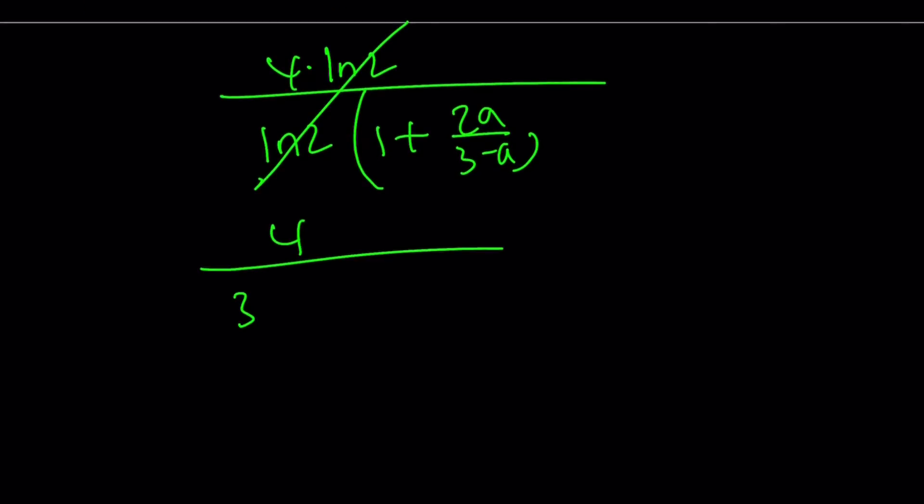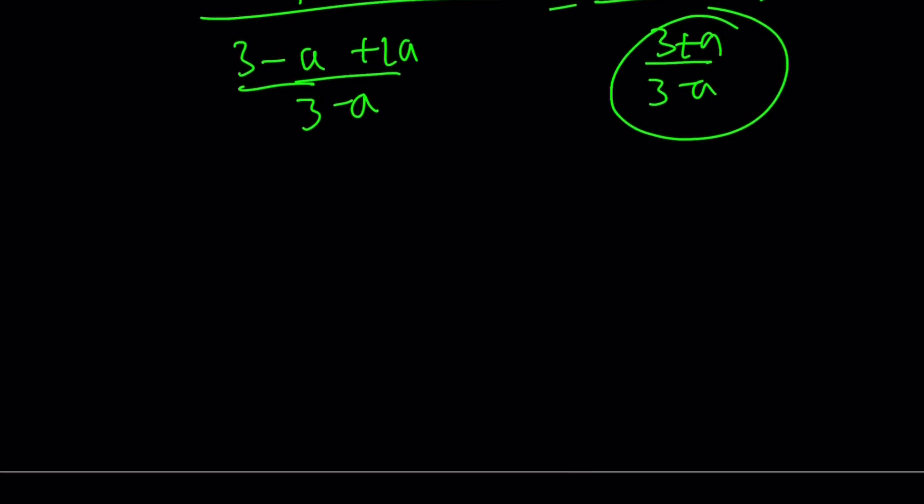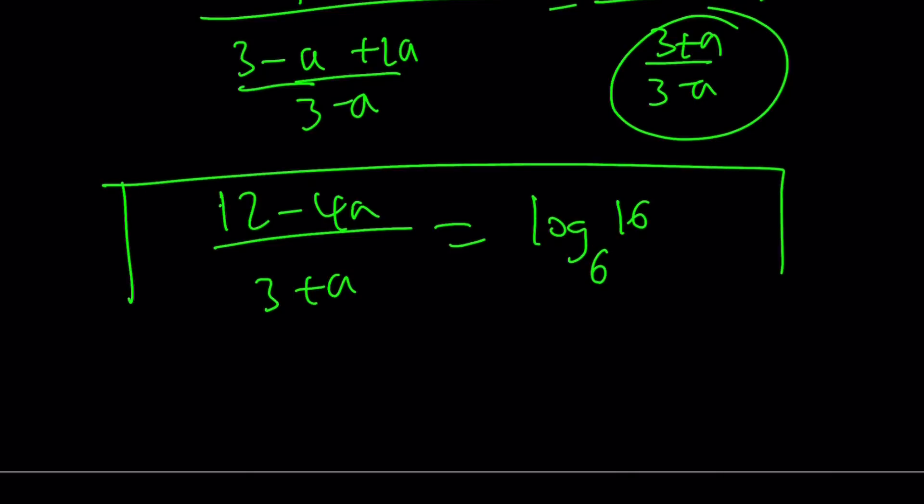Go ahead and simplify this and you're going to get the same answer. 4 over 3 minus A plus 2A over 3 minus A. I've got to make the fraction bar larger or longer so people don't complain about it. 3 plus A over 3 minus A. Flip and multiply. So 4 times 3 minus A is 12 minus 4A divided by 3 plus A. This is equal to log base 6 of 16. And this brings us to the same answer and this brings us to the end of this video.